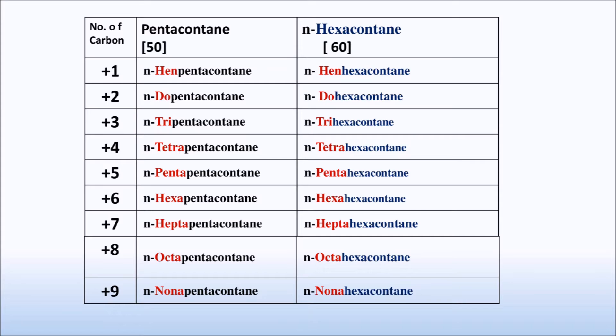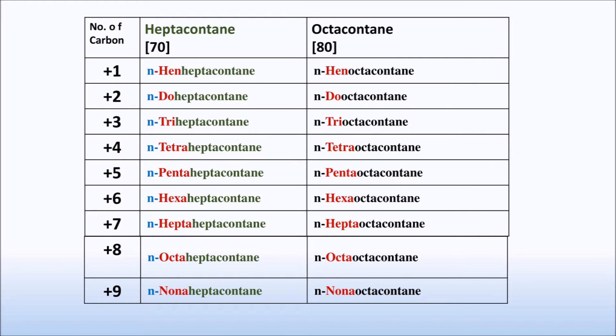Fifty-one is hen-pentacontane and sixty-one is hen-hexacontane. Fifty-two is do-pentacontane and sixty-two is do-hexacontane. Likewise, fifty-nine is nona-pentacontane and sixty-nine is nona-hexacontane.